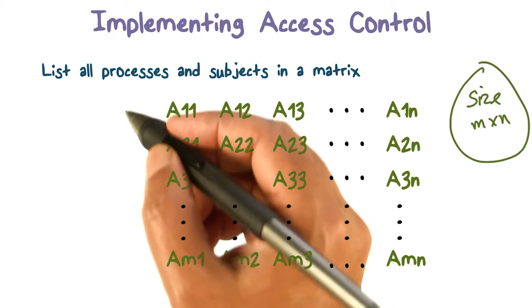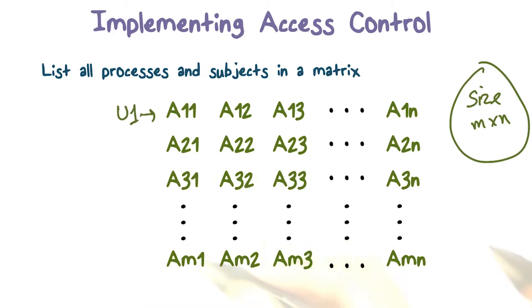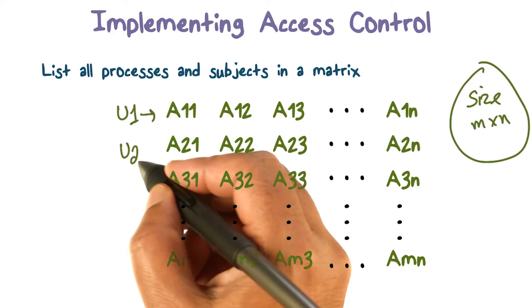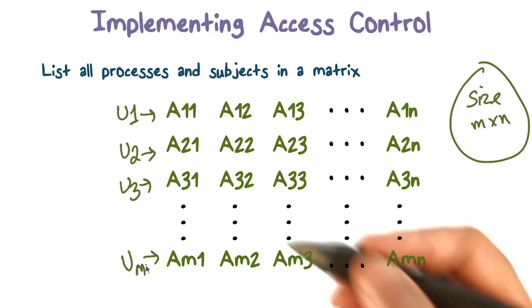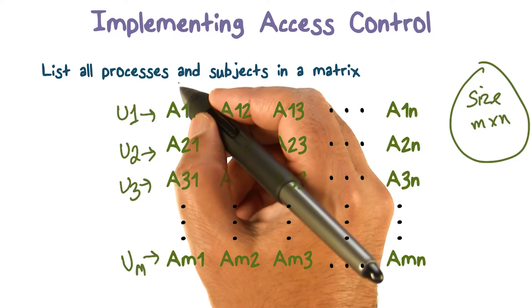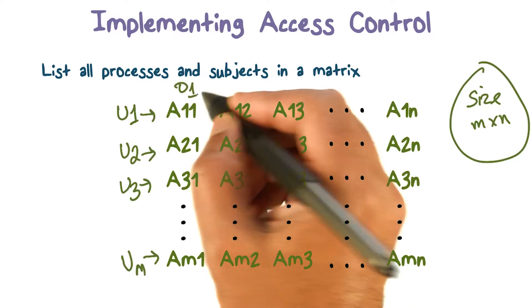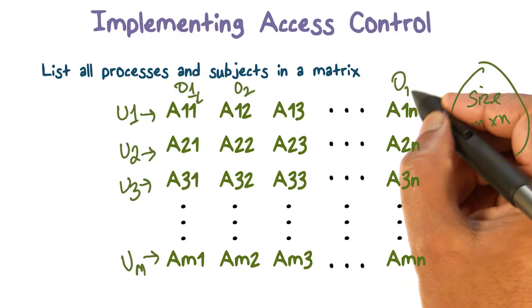The first row corresponds to user 1. Similarly, the second row corresponds to user 2, user 3, and the last one is for user m. If we look at the columns, remember these are for objects or resources. This is for object 1, this is for object 2, and all the way to object n.